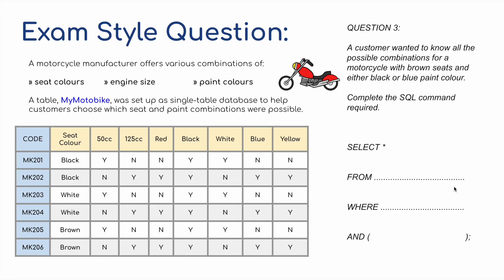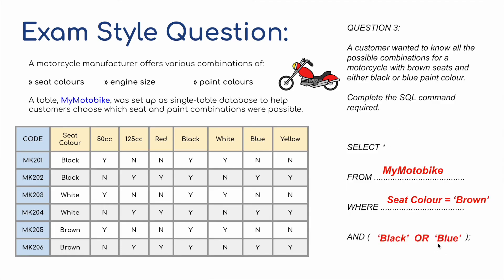Question three: a customer wanted to know all the possible combinations for a motorcycle with brown seats and either black or blue paint colour. The complete SQL command required is: SELECT * FROM mymotorbike WHERE seatcolour equals brown AND black equals yes OR blue equals yes. The 50cc engine is available in black but not blue, while the 125cc is available in either black or blue.